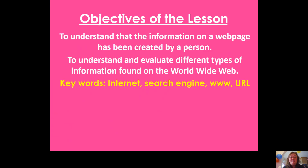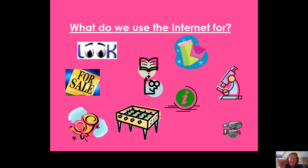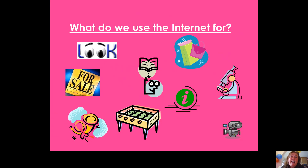We're going to be evaluating information found on the World Wide Web, and you need to realize it's made by a person. Just a quick revision — what do we use the internet for? We talked about the many ways we use the internet: information sharing, research, communication, controlling things. It is a marvellous thing, but we've got to use it really responsibly and make sure we're using it right.